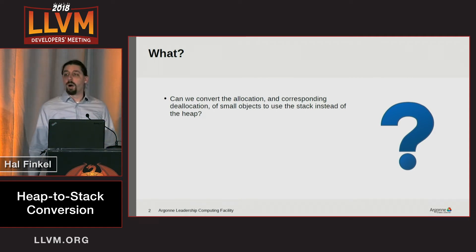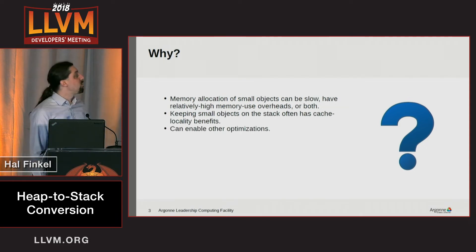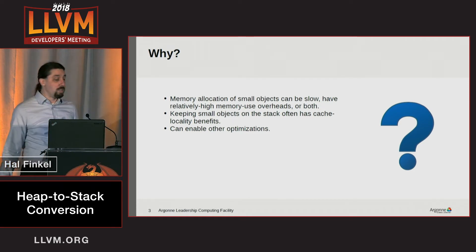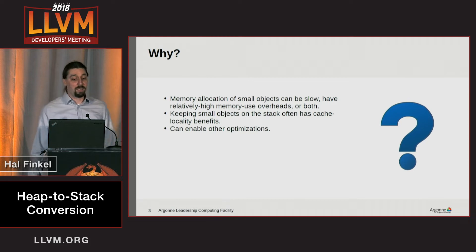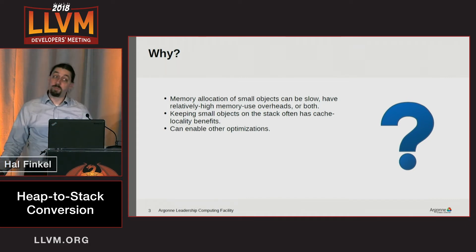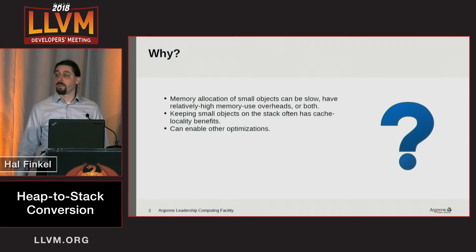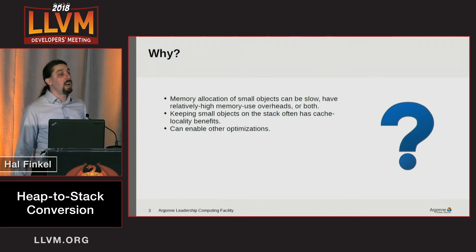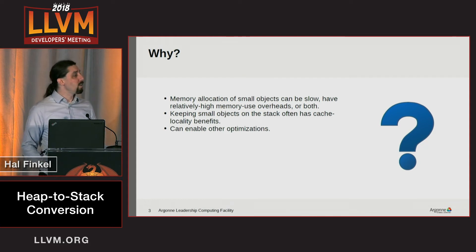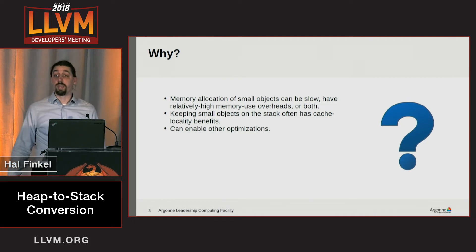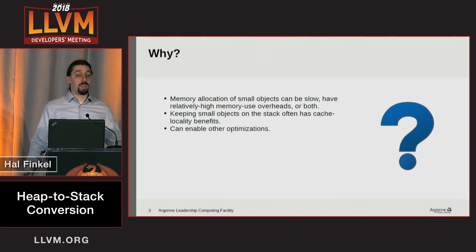There are a number of reasons why you might want to do this. I've highlighted three here. One reason is that your memory allocator may not be super fast — we can have a long debate about how fast your memory allocator is, but many people have memory allocators that aren't very fast. Second, even fast memory allocators tend to have overheads, especially for small allocations. In addition, moving memory allocations from the heap to the stack often — not always, but often — gives you memory locality benefits, because your stack data is local and the top of your stack tends to be in cache.